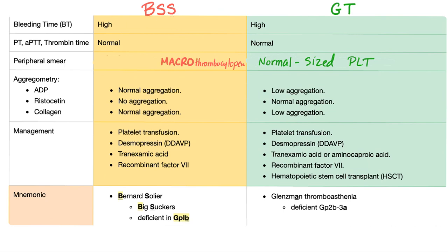Peripheral smear: in Bernard-Soulier you see macrothrombocytopenia — giant platelets. However, in Glanzmann's the platelets are normal size — neither macro nor thrombocytopenic. Platelet aggregometry: when you add ADP, you get normal aggregation with Bernard-Soulier but low aggregation with Glanzmann's. With ristocetin, there is no aggregation with Bernard-Soulier, but normal aggregation with Glanzmann's.